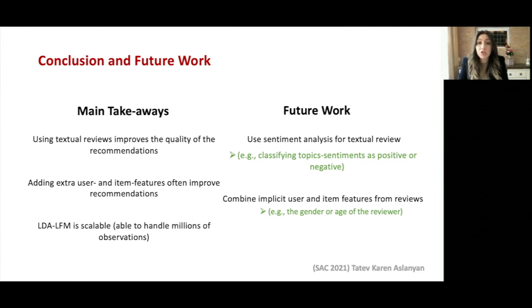Finally, we have introduced an approach as part of the algorithm that will allow adding extra user and item features to the recommender. As continuation of this work, one could consider using sentiment analysis for the textual reviews to further improve the quality of the recommendations by, for instance, classifying topic sentiments as negative or positive, by combining topic modeling, rating modeling, and sentiment analysis. Additionally, one can combine implicit user and item features from the reviews, which goes beyond the ratings.